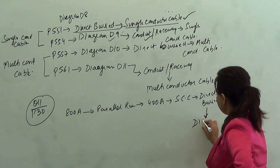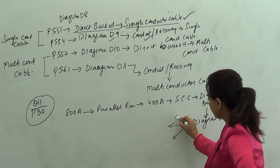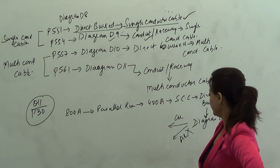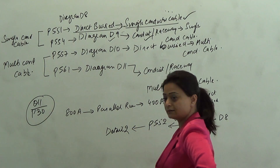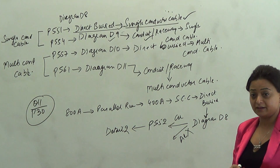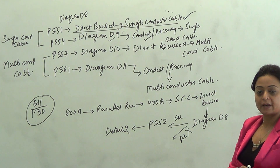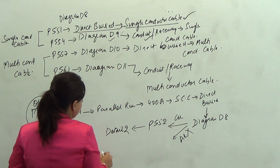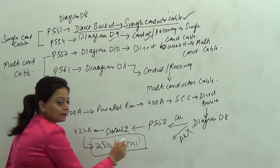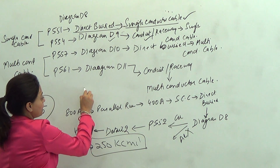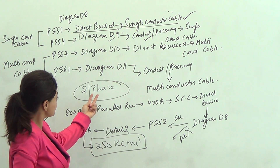D8 refers to two tables — one is copper, one is aluminum. Because the conductors are not aluminum, we go to page 552. Look for detail 2 because detail 2 is the parallel run column. Detail 1 is one cable per phase but detail 2 is two cables per phase. On detail 2, you are looking at 400 amps — what's your closest match? 422 amps, which refers to 250 kcmil. That's your answer. When your book says two per phase, it doesn't mean two-phase — it means two cables per phase, which means parallel run.